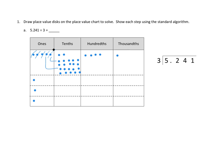Now we move on to our tenths. We have twenty-two tenths to divide across three groups. Twenty-one divided by three is seven, so we can put seven tenths in each group, accounting for twenty-one of those dots.